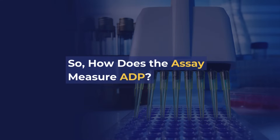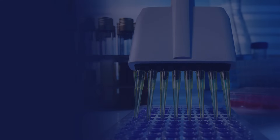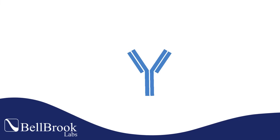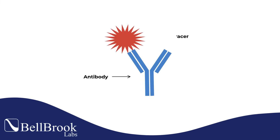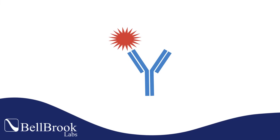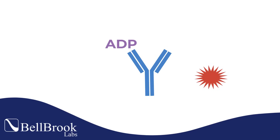So how does the SA measure ADP? Transcreener consists of an antibody and tracer. When ADP forms during the enzyme reaction, it competes with the tracer, changing the fluorescent properties and allowing for a measurement to occur.